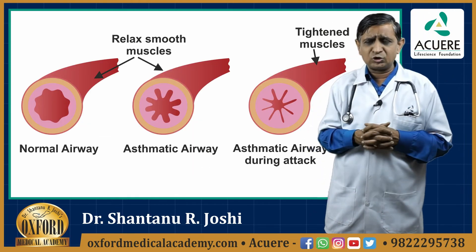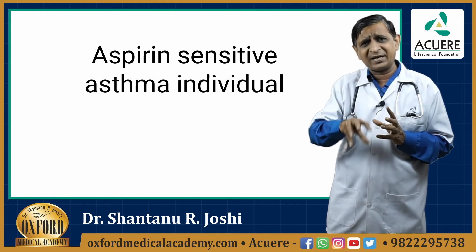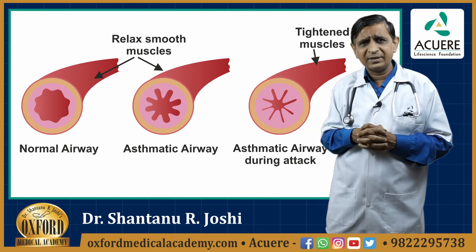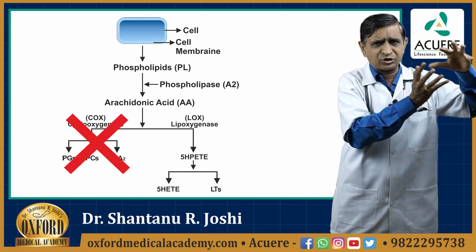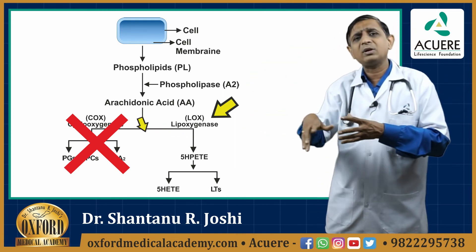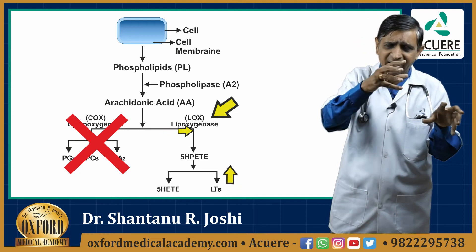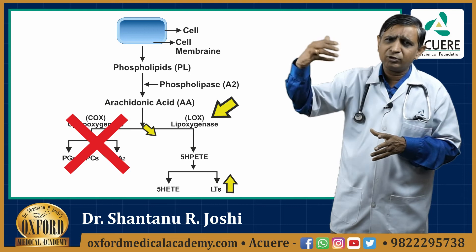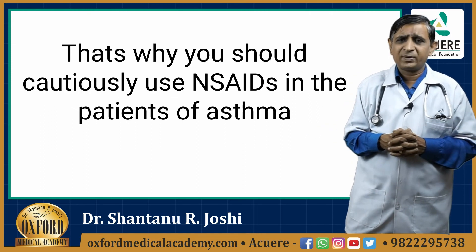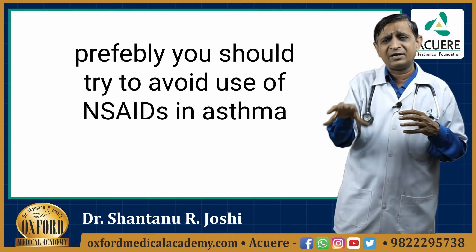NSAIDs should not be used in patients with asthma; especially aspirin should not be used in aspirin-sensitive asthmatic individuals. The same arachidonic acid pathway explains why: when aspirin blocks the cyclooxygenase pathway, more arachidonic acid is available to be converted through the lipoxygenase pathway, resulting in more production of leukotrienes. Blocking the COX pathway enhances the LOX pathway and produces more leukotrienes, which are the major mediators of asthma. That is why NSAIDs should be avoided in asthma patients.